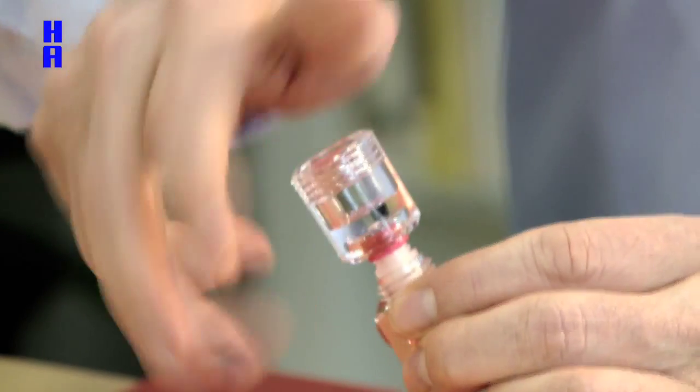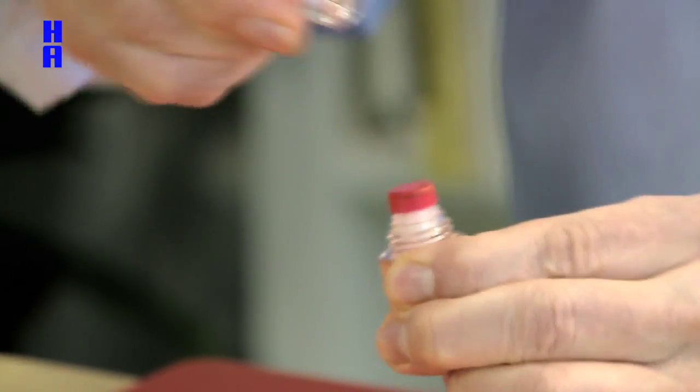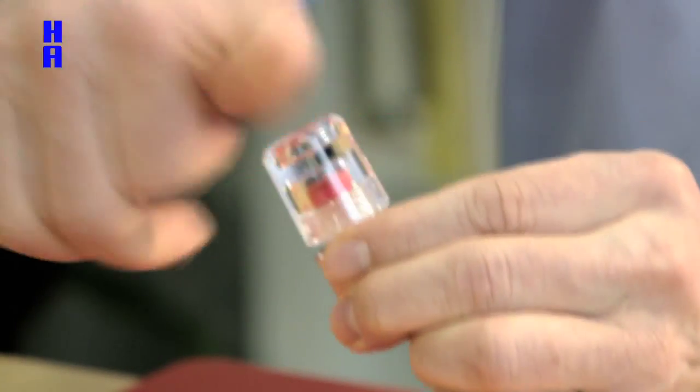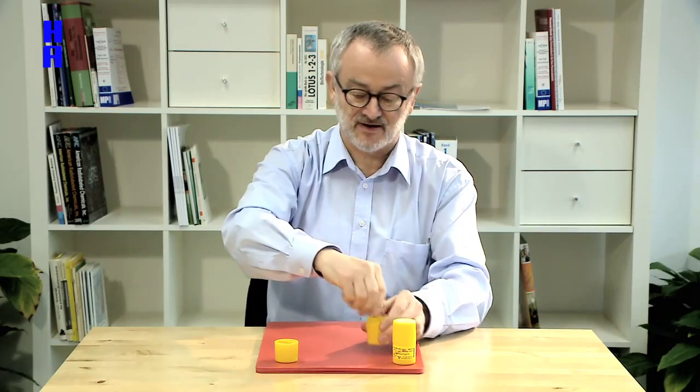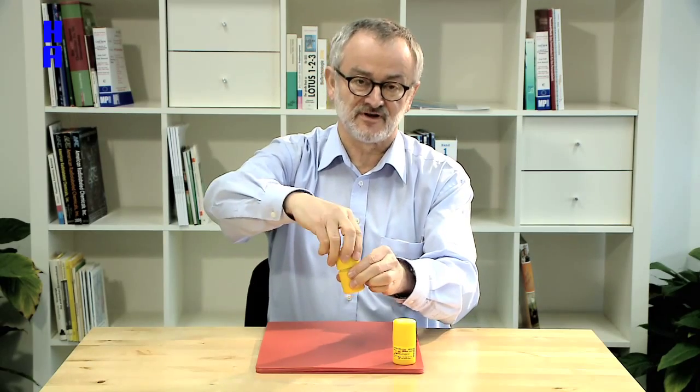put the cap back again, turn around, bend the plexi vial away, screw it back again, put it back again and close the yellow vial.